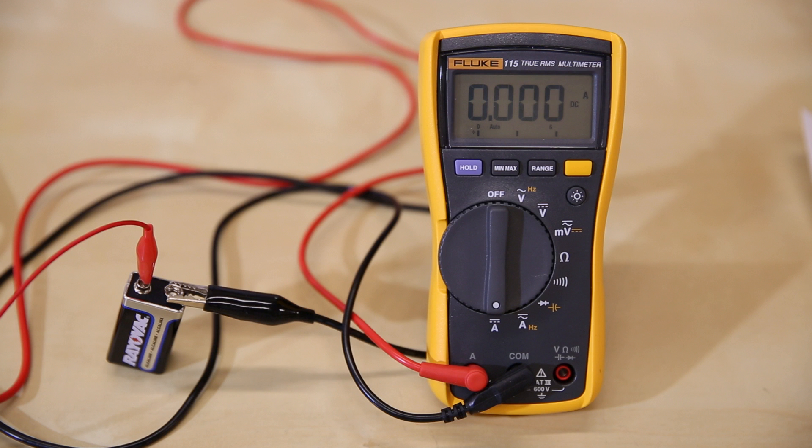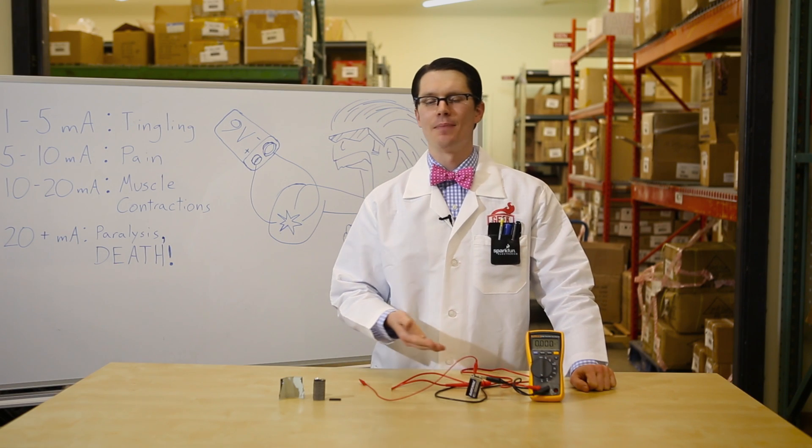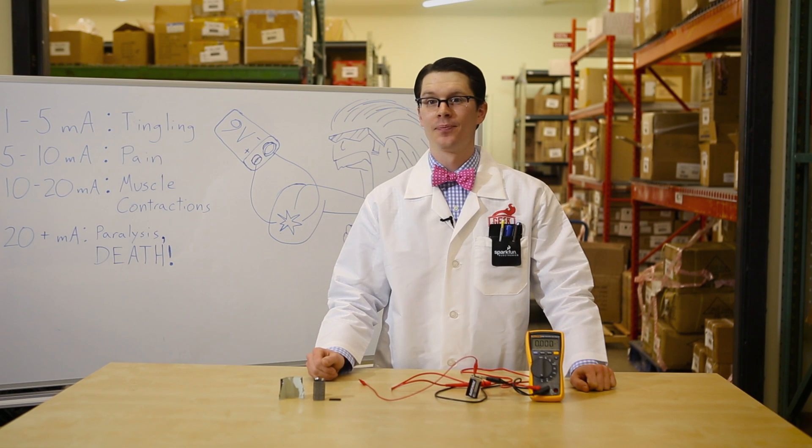So what I have set up here is a 9-volt battery connected to a multimeter. That way we can see the amount of current flowing through my tongue. Let's give it a shot.